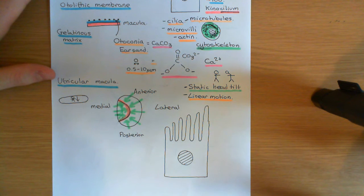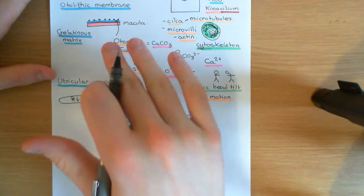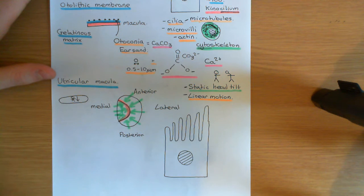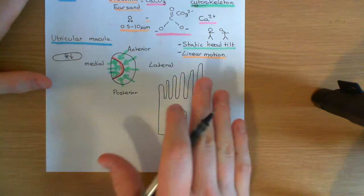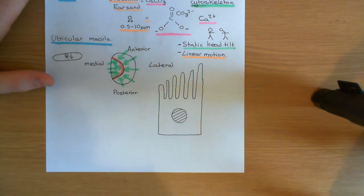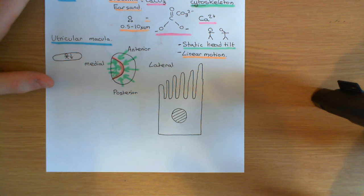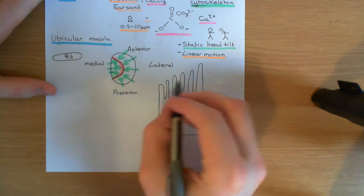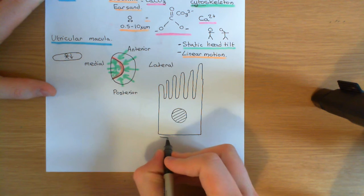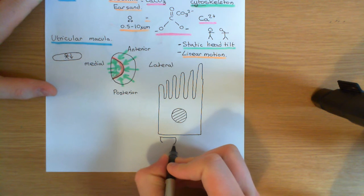We now want to understand how these sensory organs encode information about head tilt and linear motion into electrical signals that can be sent to the brain and interpreted. It all comes down to the hair cells — these are the really important structures. The hair cells of the maculae of the otolith organs are going to be innervated by sensory neurons that send their axons into the vestibular nerve to transmit information to the brain.